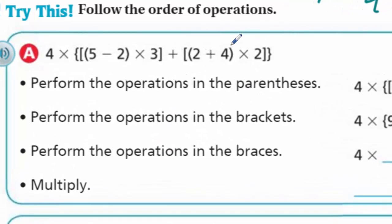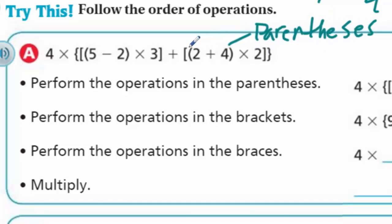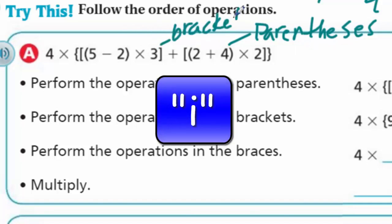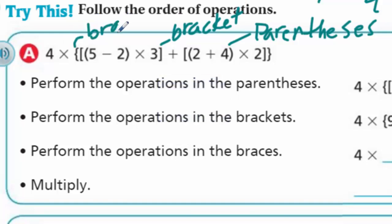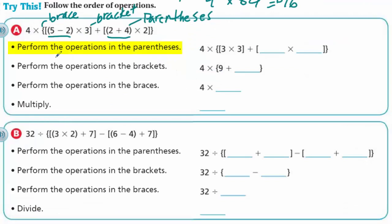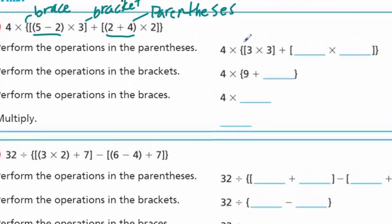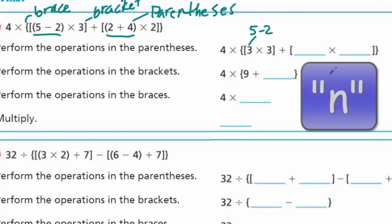Let's try this - follow the order of operations. Quick vocabulary: a single one is a parenthesis, a pair are parentheses. This one is called a bracket, and this new one is called a brace. They look different but we use them the same way - always go to the innermost first. We don't worry about the times three on the outside yet; we go way into the inside and perform operations in the parentheses first.